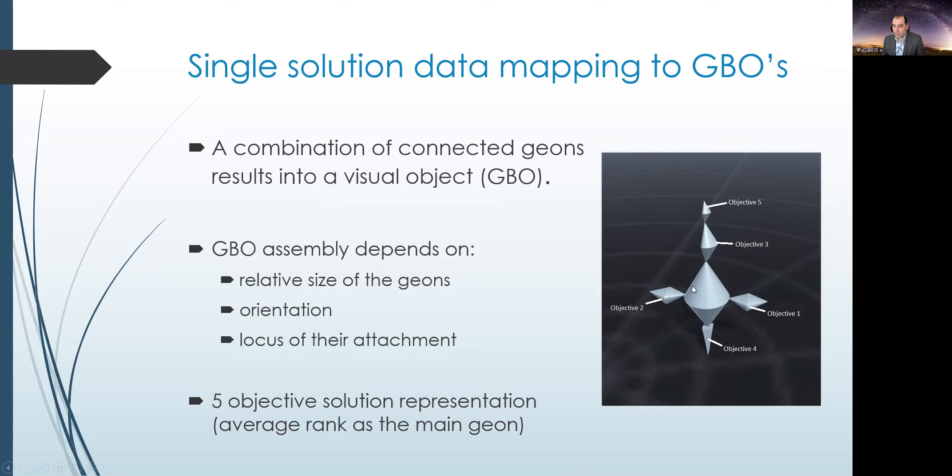The normal process is to normalize each objective score and we split it into four quantiles. So each Geon will represent the quantiles in this case. If we look here in the image, we have objective one, two, three, and five representing the same quantiles. So they're part of the same group. If we look at objective four, it represents a completely different quantile. So the shape is completely different. And yet again, the average rank belongs to a different quantile and its shape is different from the other objectives.